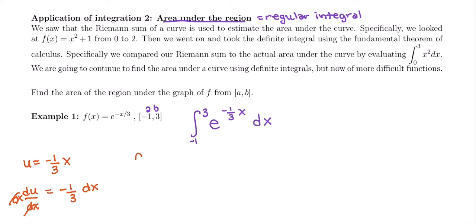We have our u and our du, and now we can change our bounds. Our old x value is negative 1 for the lower bound and 3 for the upper bound. I'm going to plug in and figure out what u would be when x is those values. So u is negative one-third of whatever x is, in this case negative 1. Negative times negative makes it positive one-third.